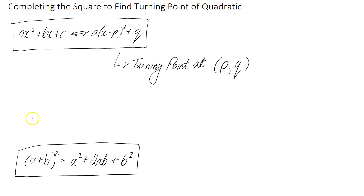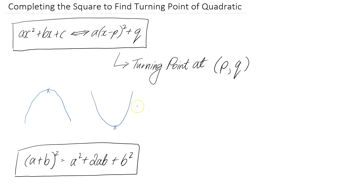Quadratics are typically going to look something like this, or like this, depending on whether they're the happy face or the sad face kind of shape. One of the key points associated with them is the turning point — that's where it changes direction. So for this case it's the top point, and for this case it's the bottom point. From this particular form, it's quite difficult to anticipate where that is going to fall.